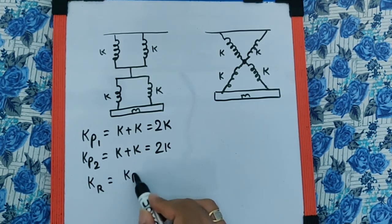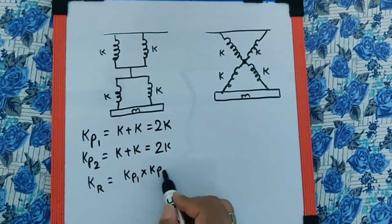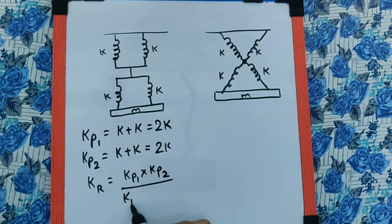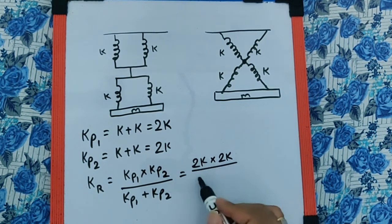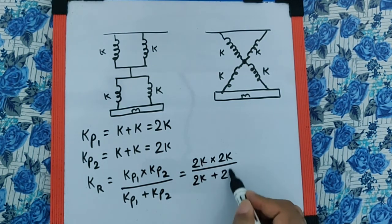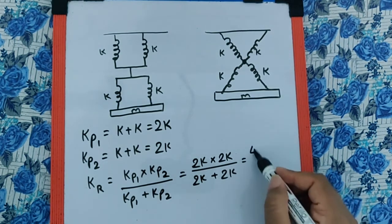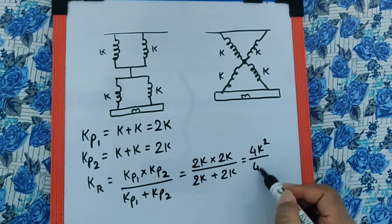it is going to be KP1 into KP2 upon KP1 plus KP2, which is nothing but 2K into 2K upon 2K plus 2K, which is like 4K square by 4K,